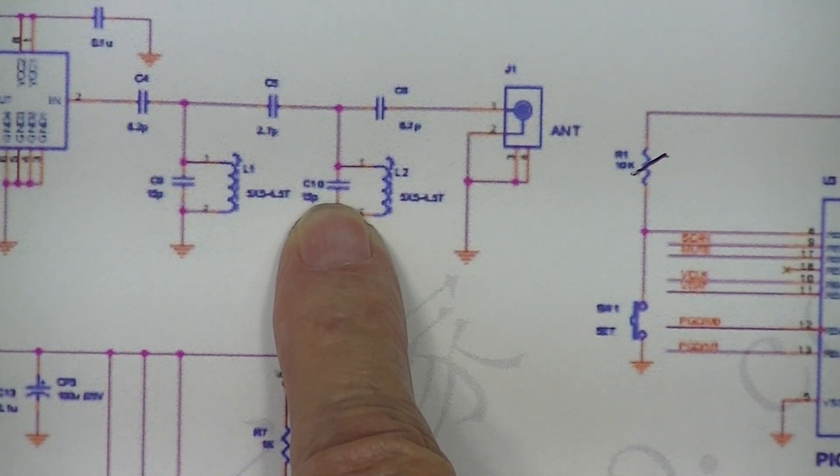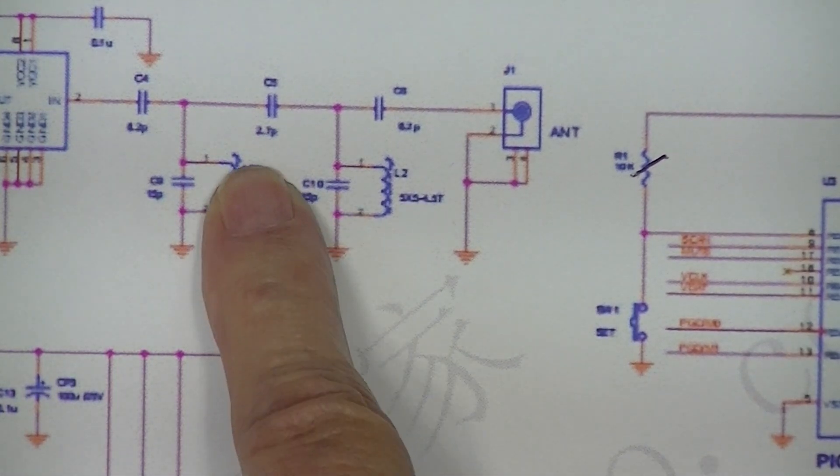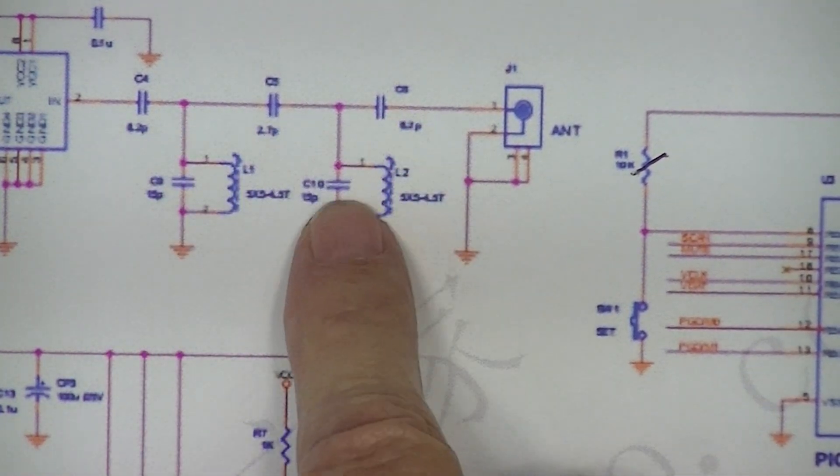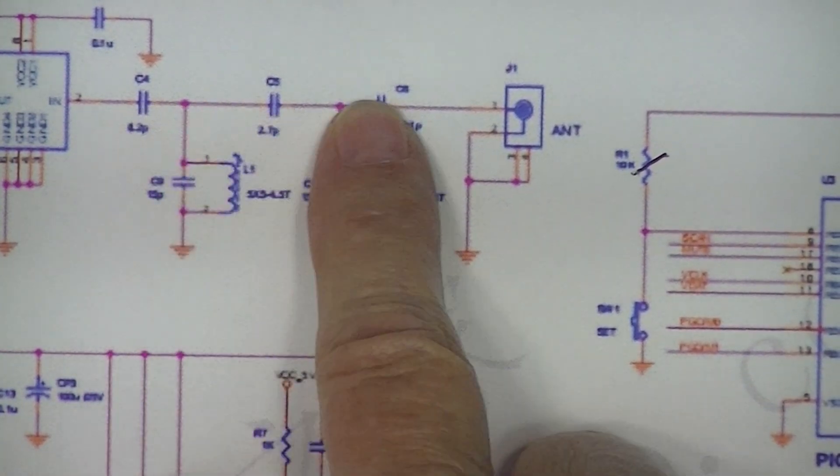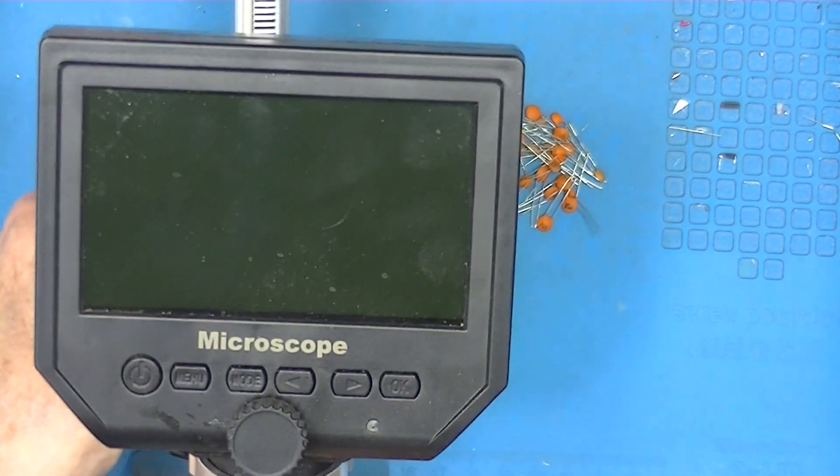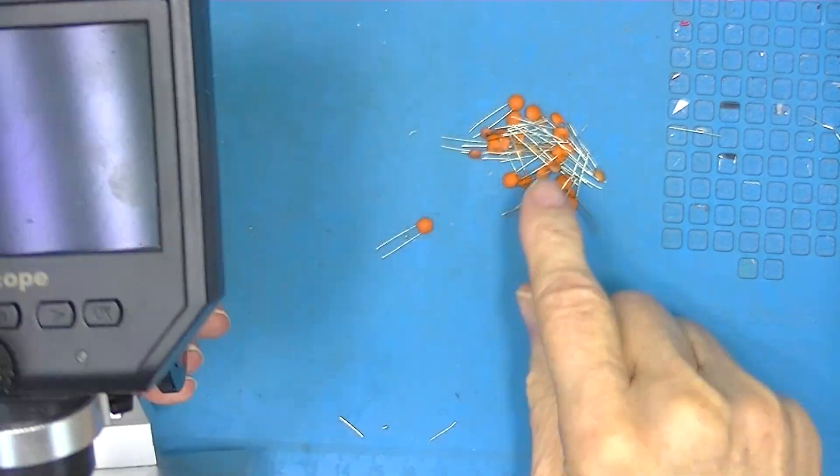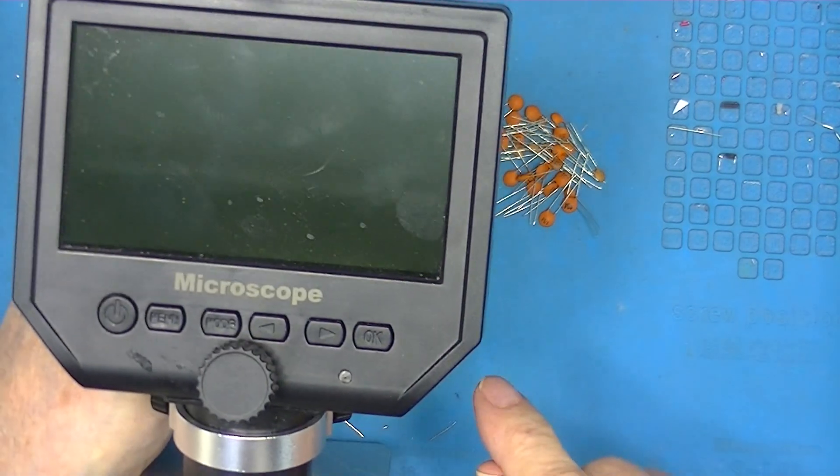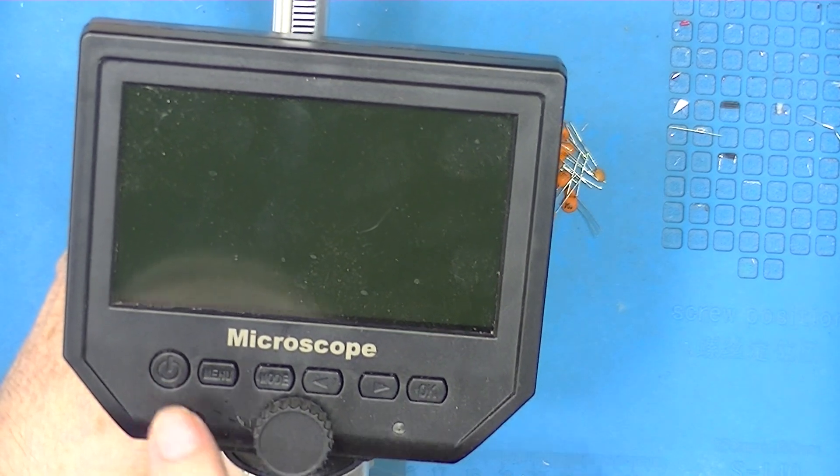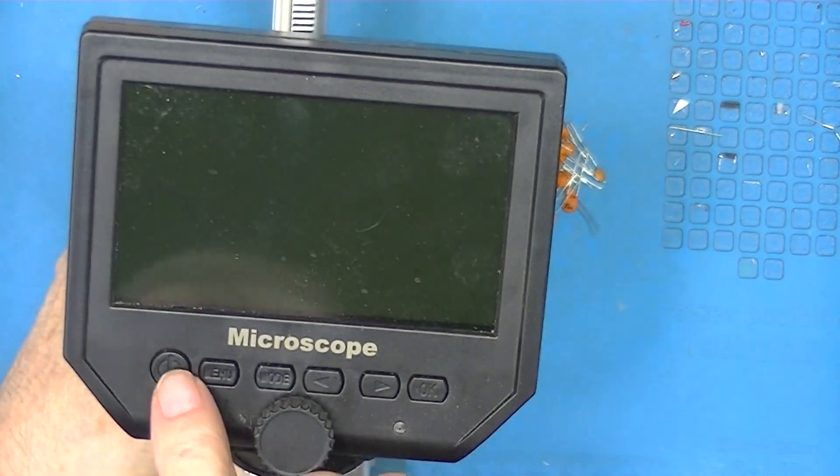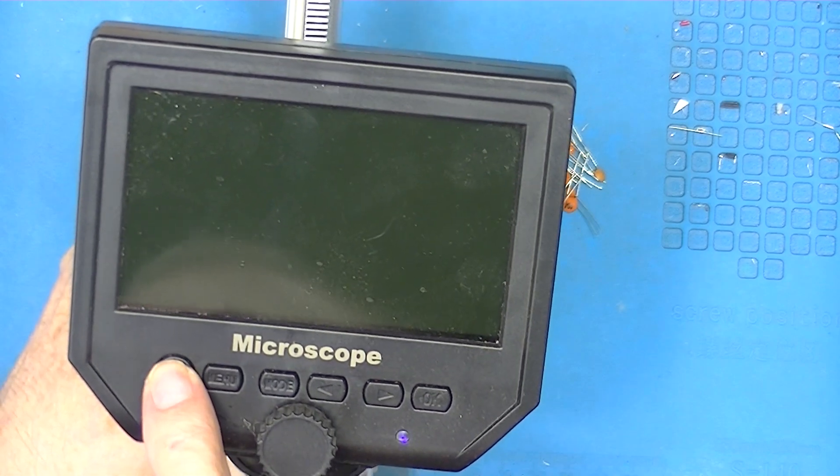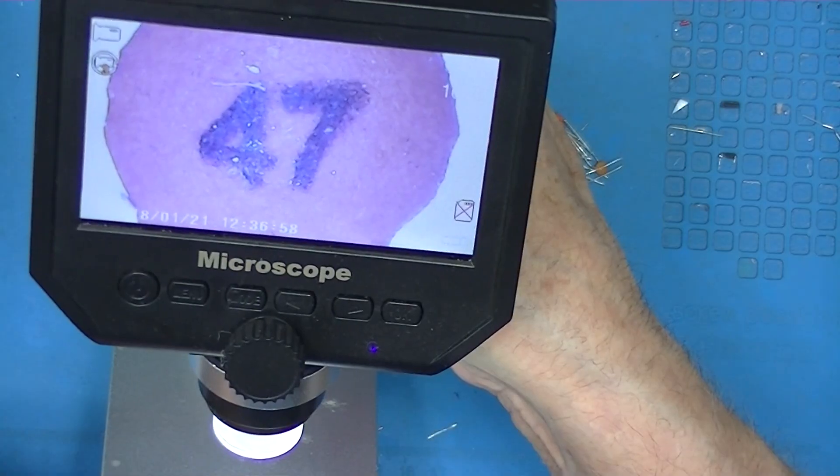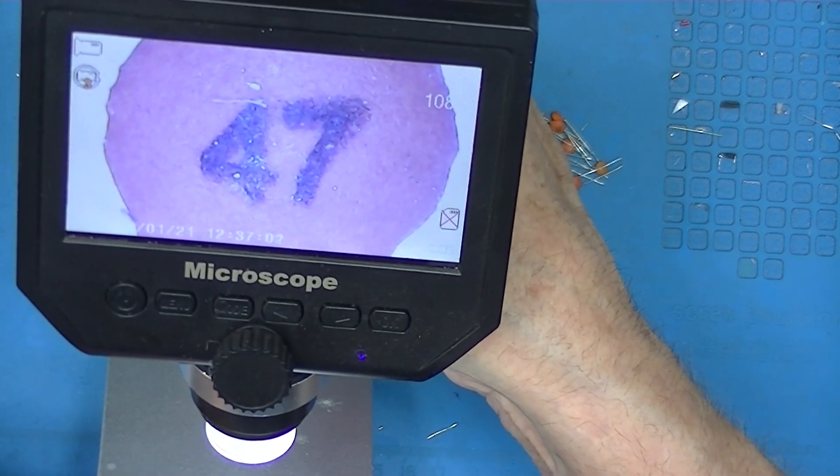These two are 15 picofarad. These inductors are tunable, but we wouldn't want to be wildly off on any of these five capacitors. Because these capacitors are very small and they're identified with numbers, I'm going to use this microscope with an electronic display.